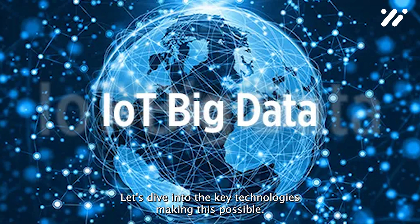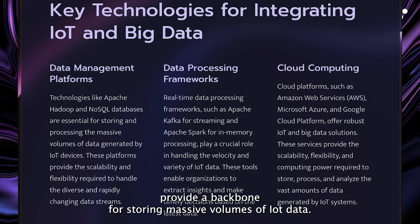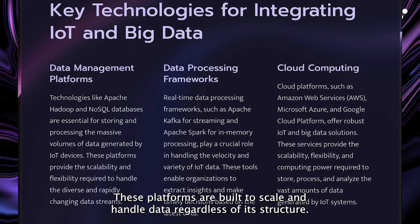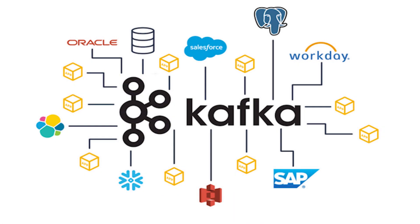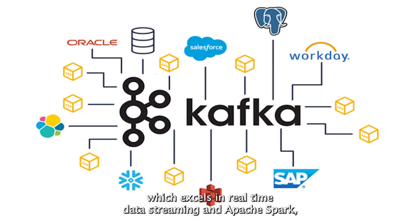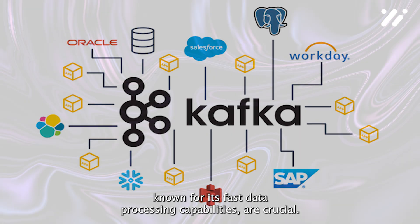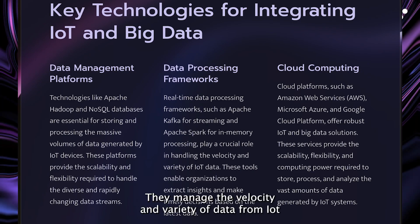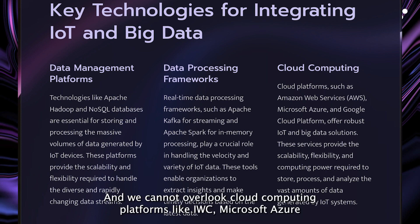Data management platforms like Apache Hadoop and NoSQL databases provide a backbone for storing massive volumes of IoT data — built to scale and handle data regardless of its structure. Data processing frameworks such as Apache Kafka, which excels in real-time data streaming, and Apache Spark, known for its fast data processing capabilities, are crucial. They manage the velocity and variety of data from IoT devices, ensuring that data is processed swiftly and efficiently.